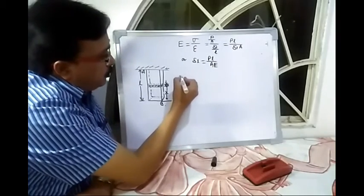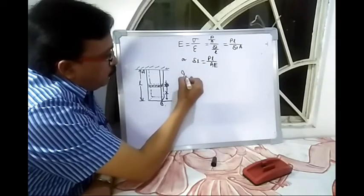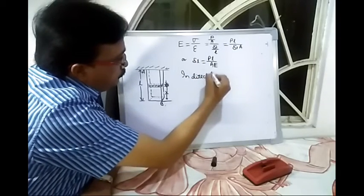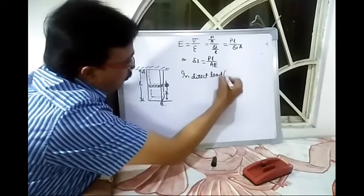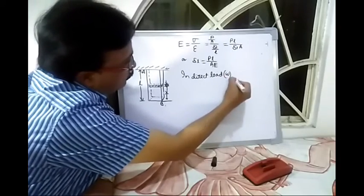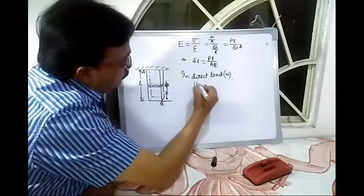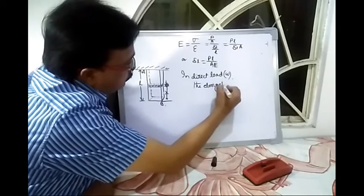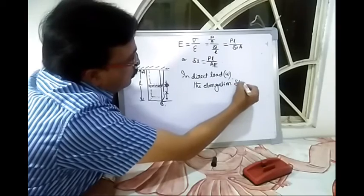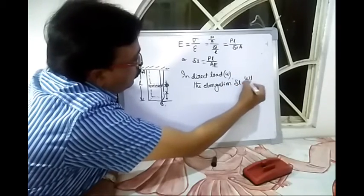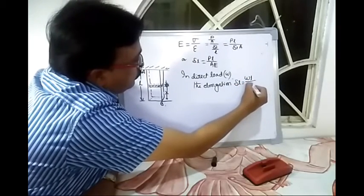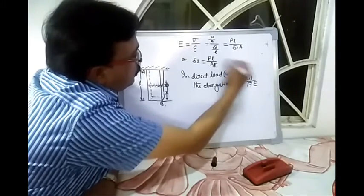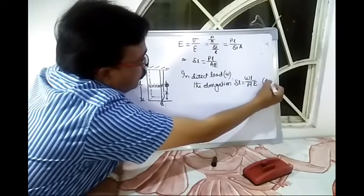So in direct load, the elongation delta L is equal to WL by AE, as P is equal to W.